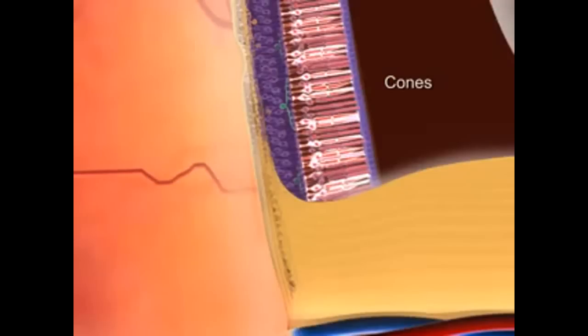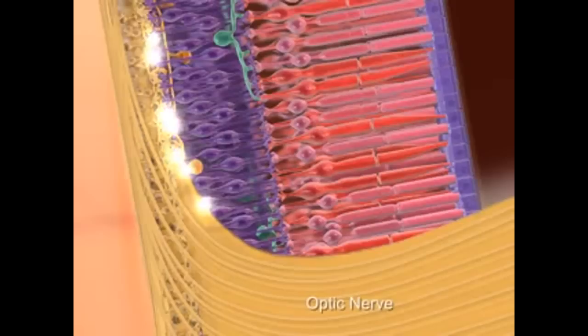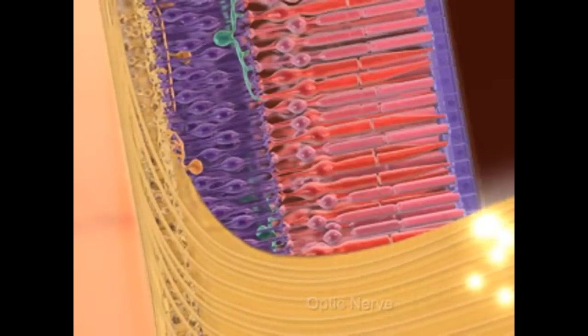The highest concentration of cones is in the fovea centralis. The rods and cones synapse with bipolar cells, which then synapse with the ganglia cells, whose axons form the optic nerve.